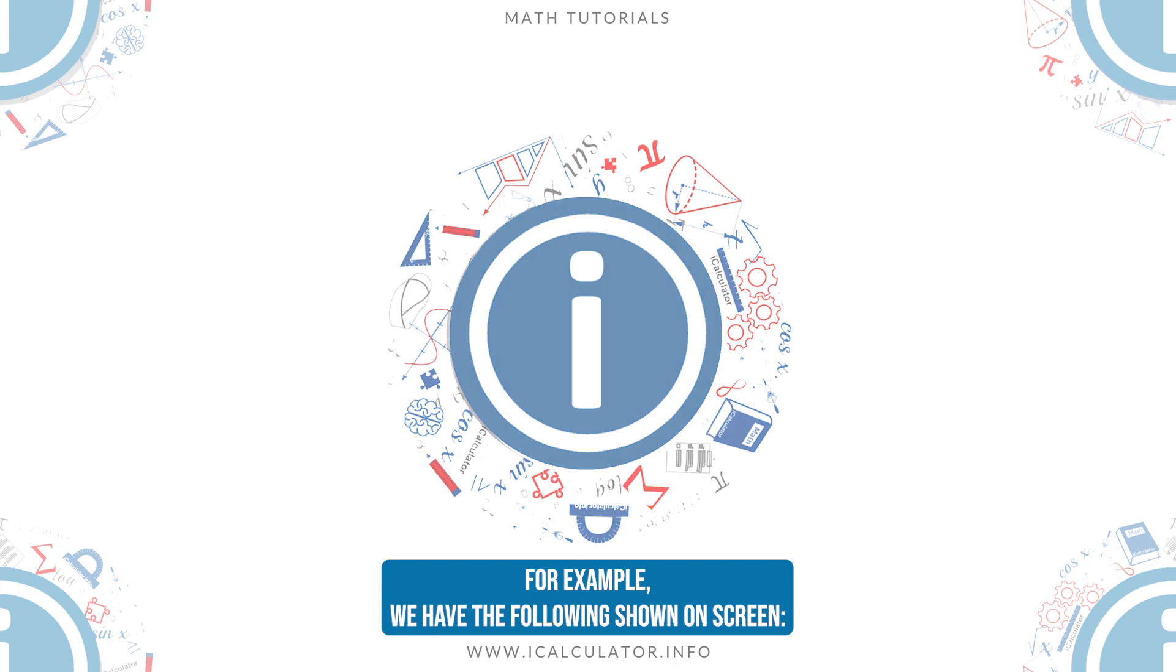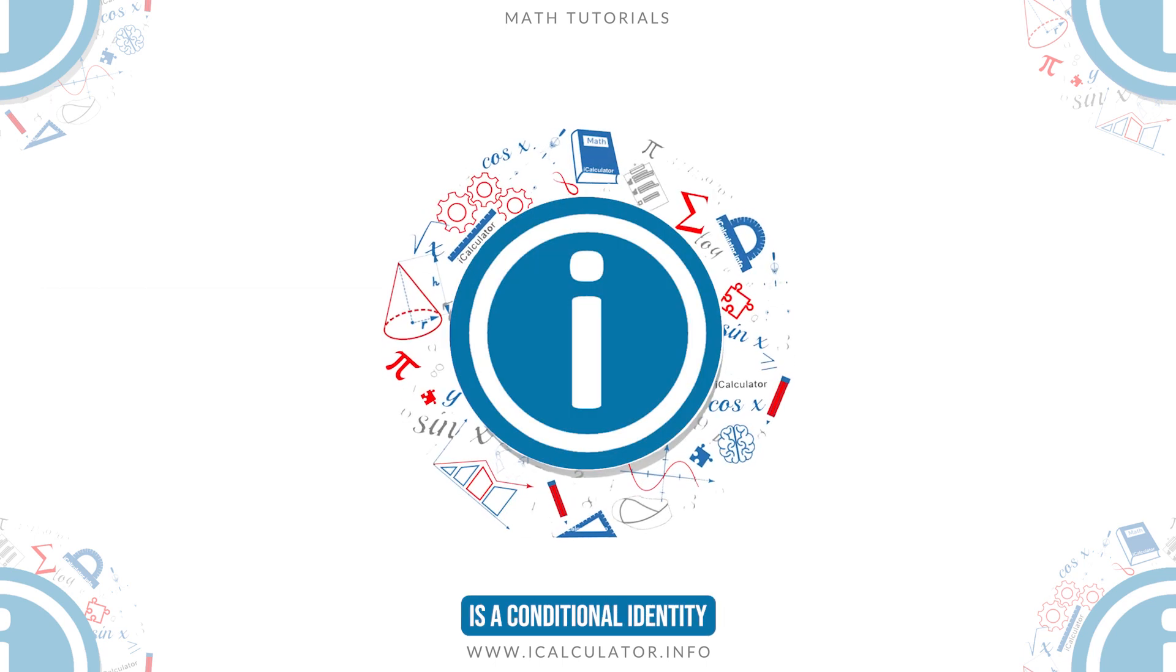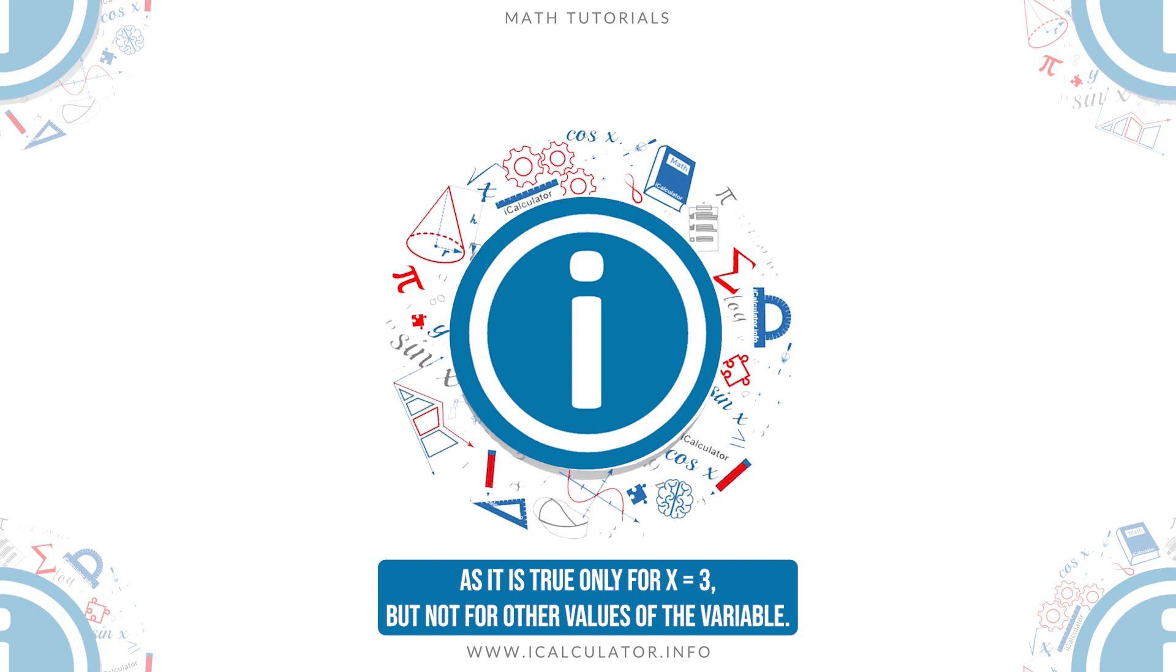For example, we have the following shown on screen. This is a conditional identity, as it is true only for x equals 3, but not for other values of the variable.